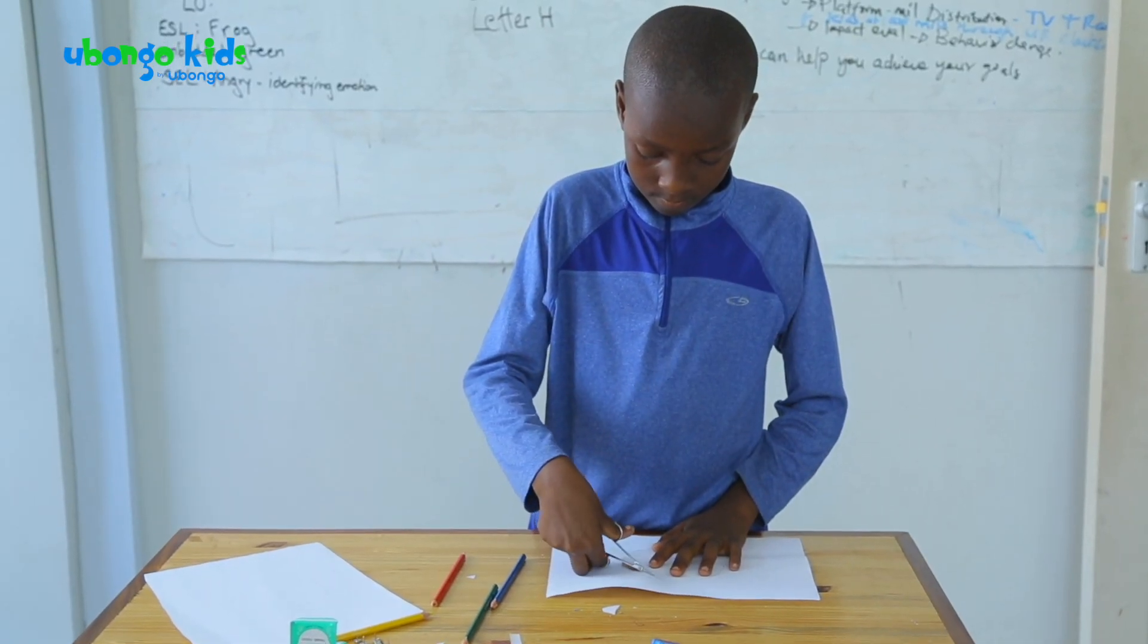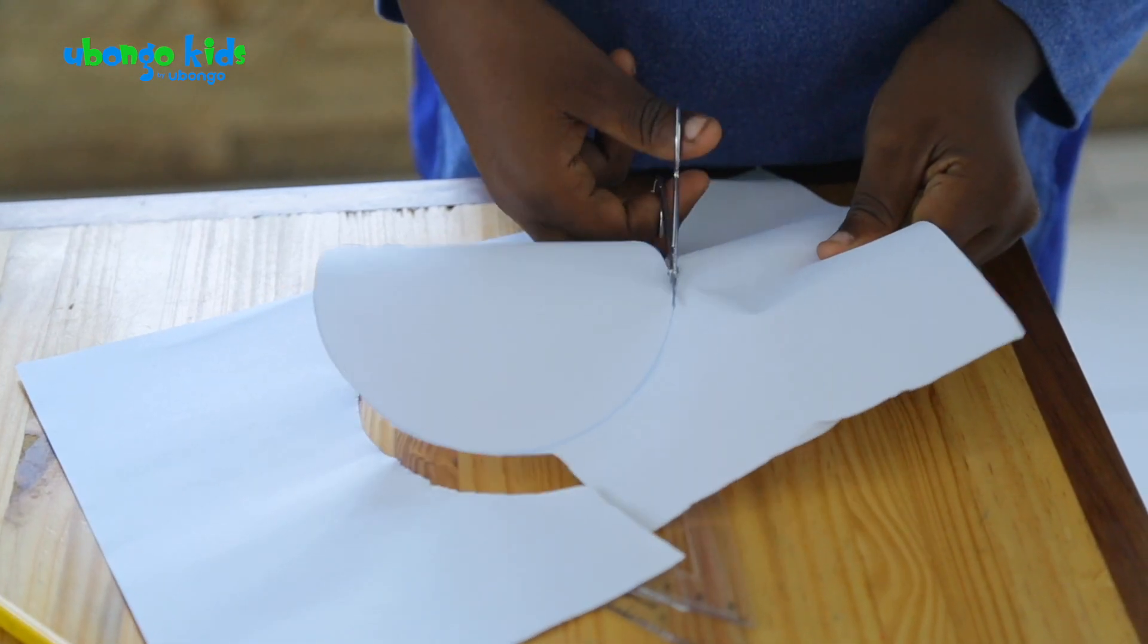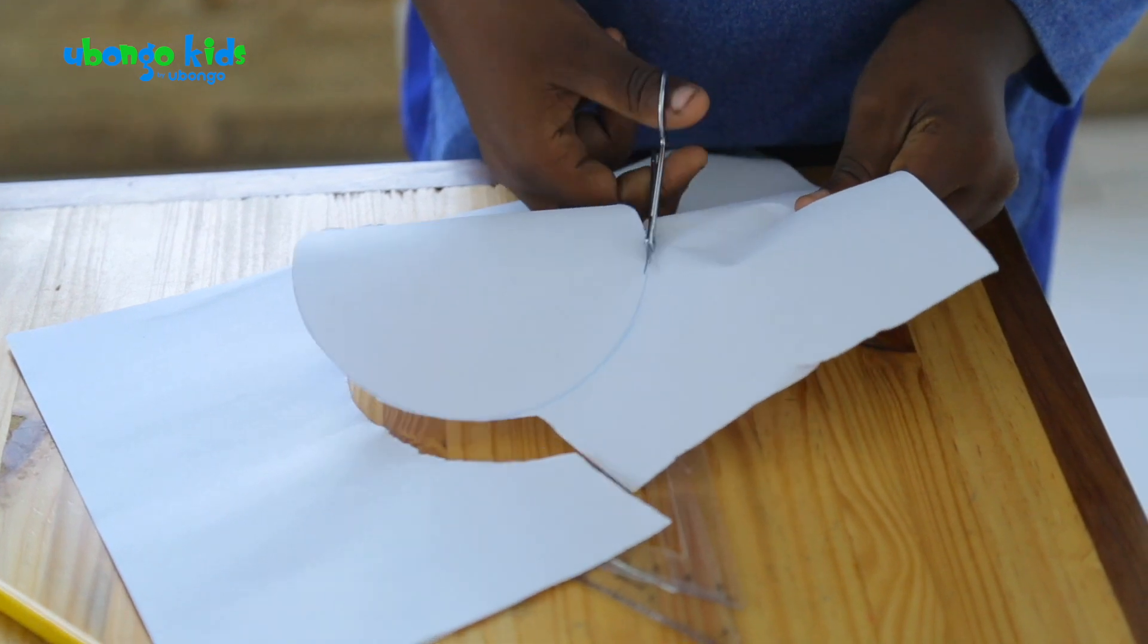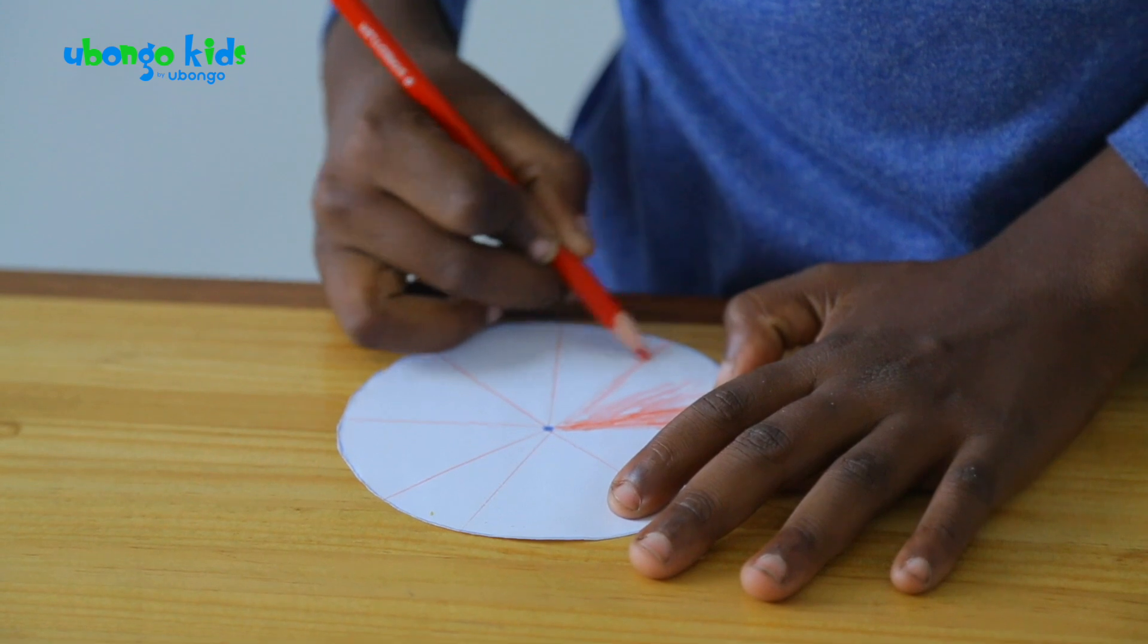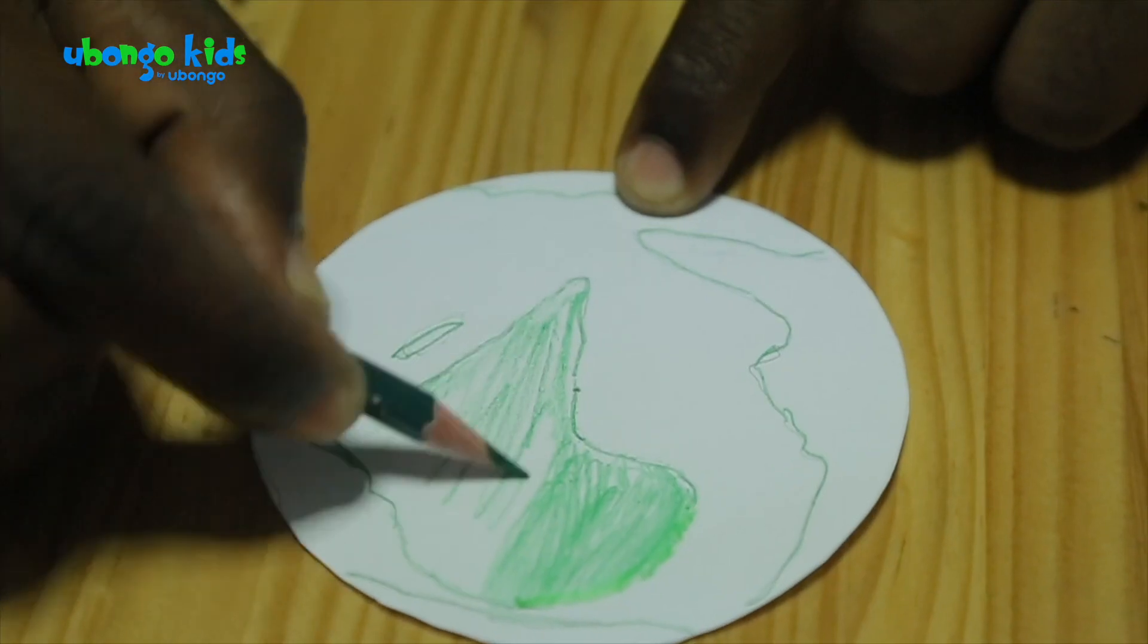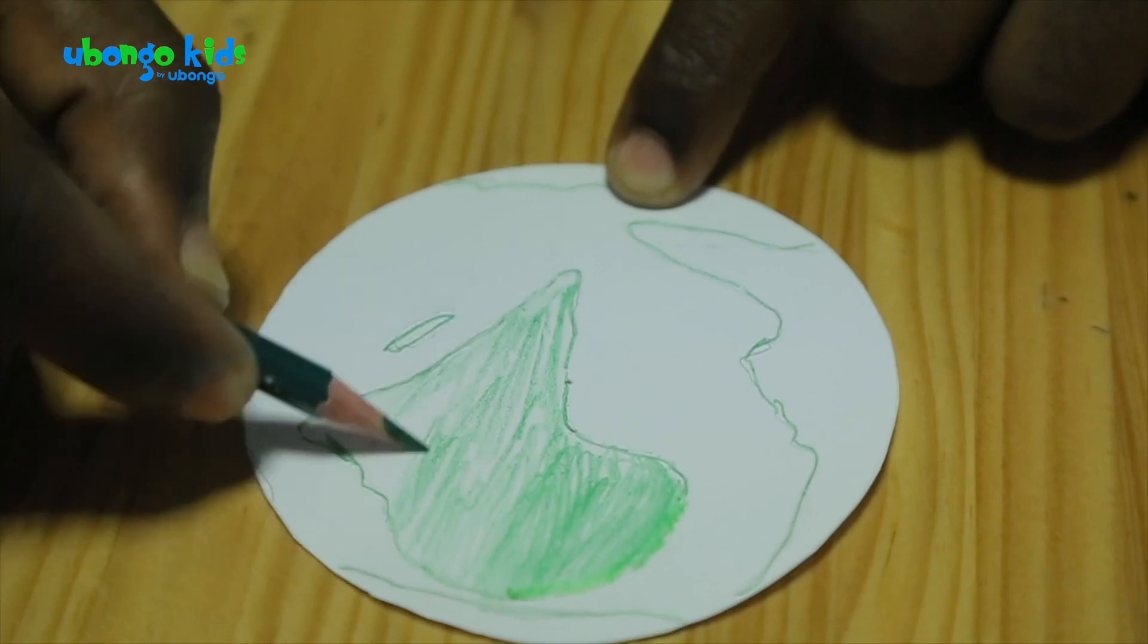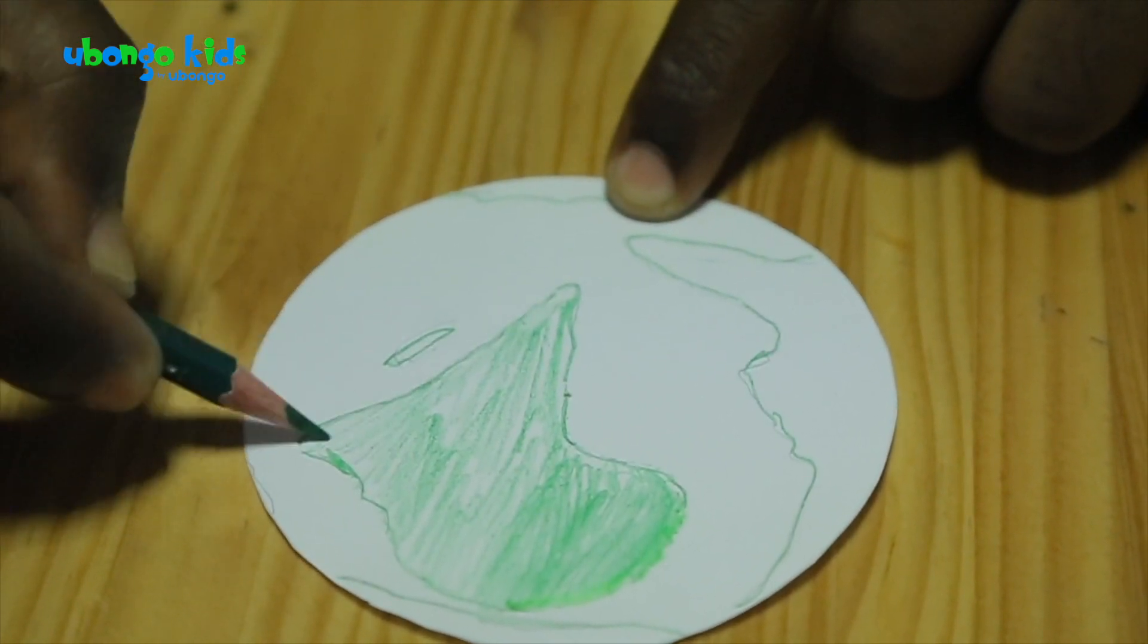Then take the scissors and carefully cut out each circle. You should have three different sized circles. Color the bigger circle in red because that is the color of the sun. Color the second circle in green. Now it will really start to look like the earth with its green land.